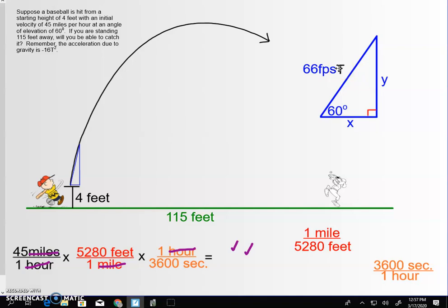So, let's get our parametric equations set up. First of all, let's talk about X. We know that X is going to be a function of time. So, let's see. Here's X. I know this is 60 degrees and I know the hypotenuse is 66T.